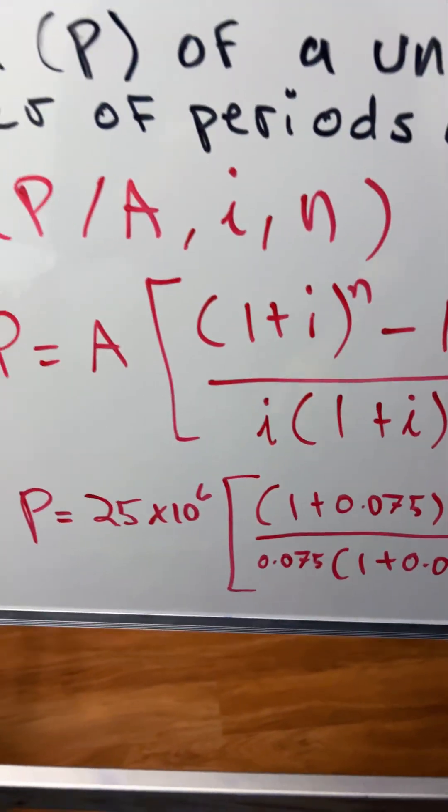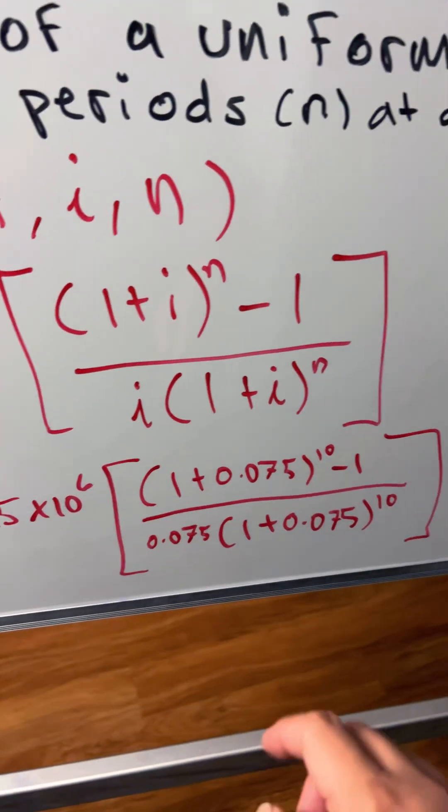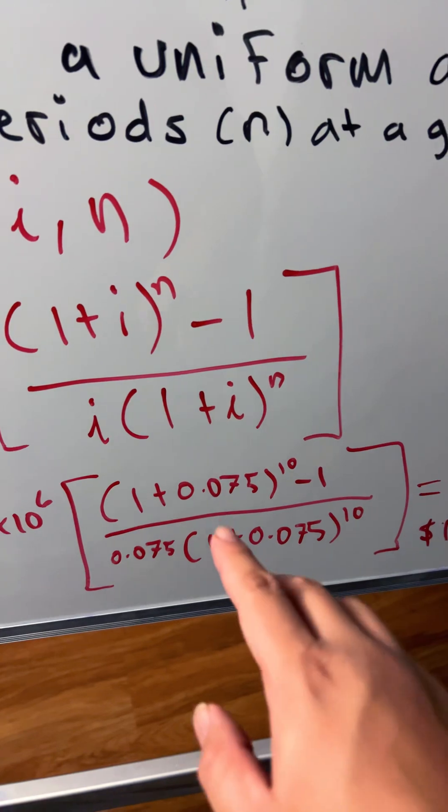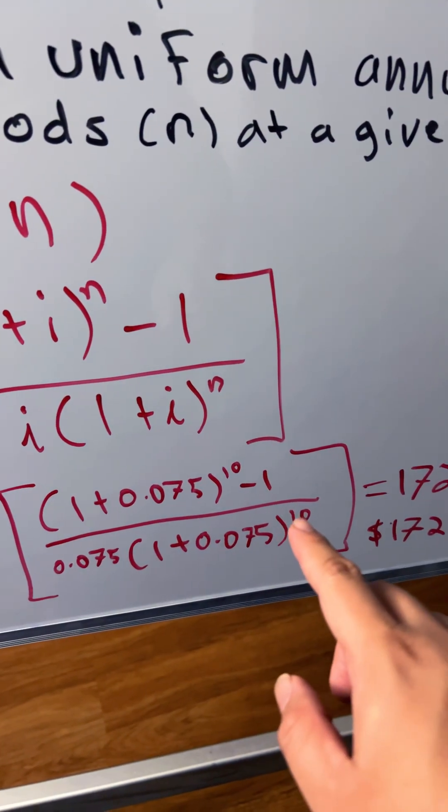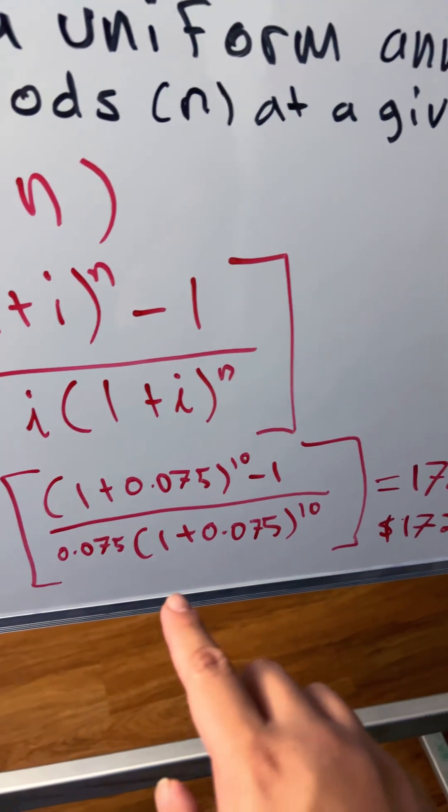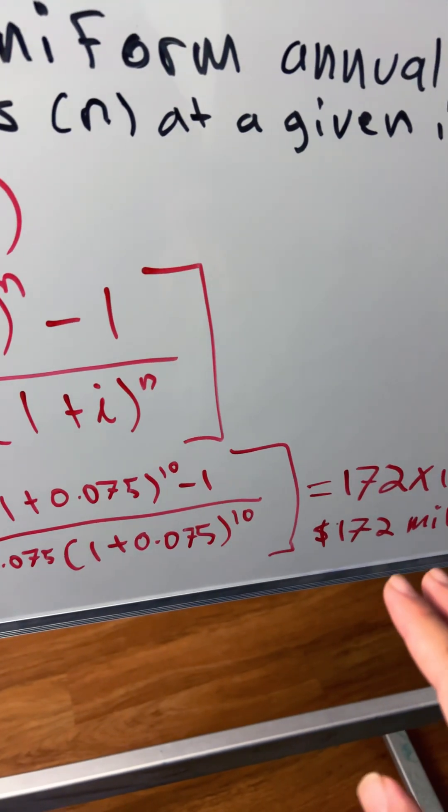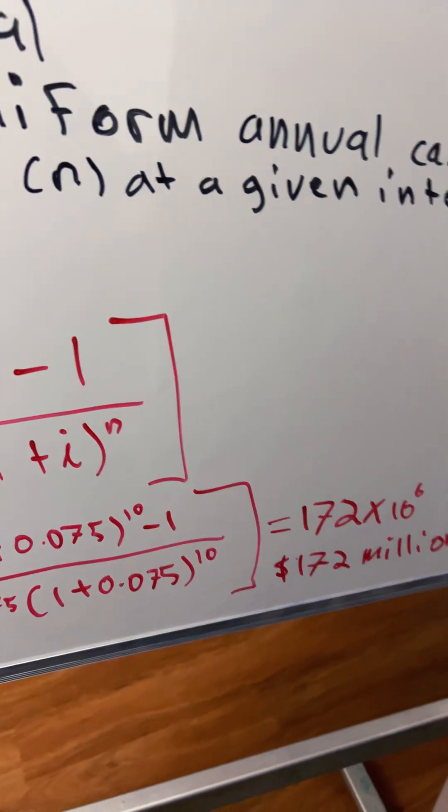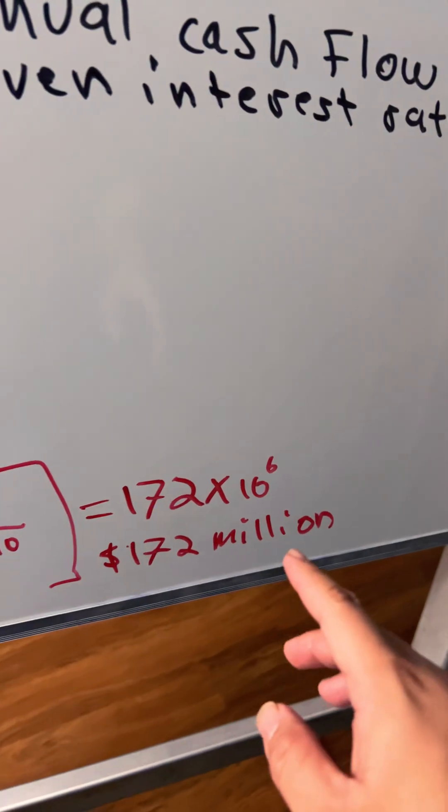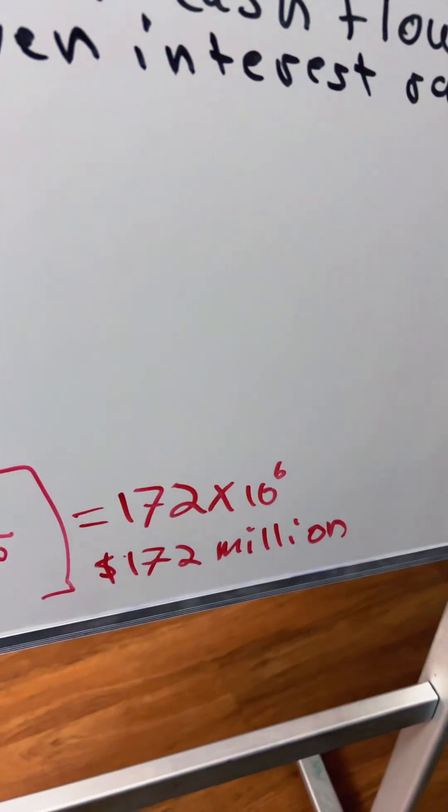We're going to plug in the numbers: 25 times 10 to the 6. It will be 1 plus 0.075 raised to the 10 minus 1 divided by 0.075 times 1 plus 0.075 raised to the 10, and that will give us 172 times 10 to the 6 or $172 million.